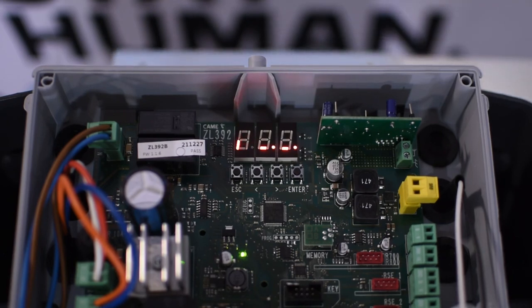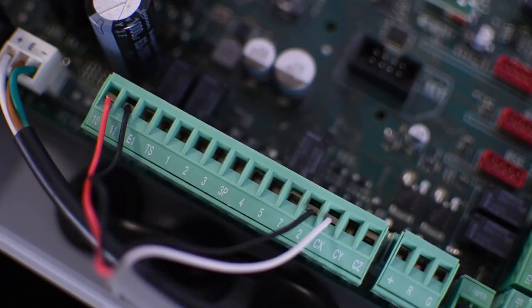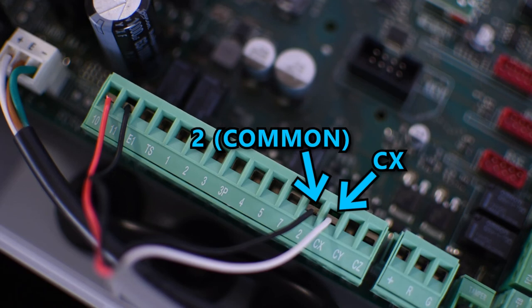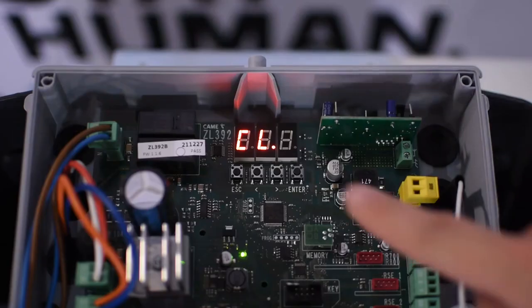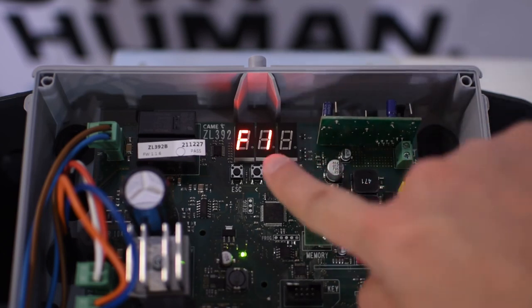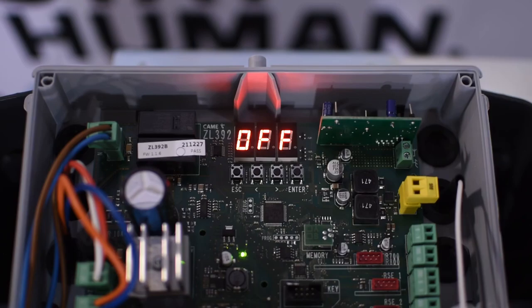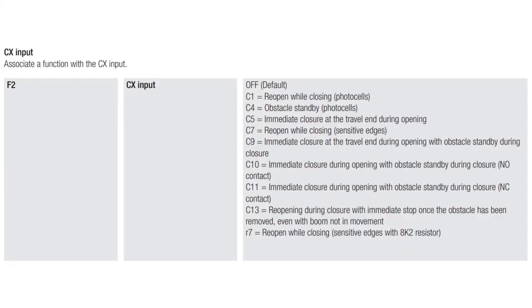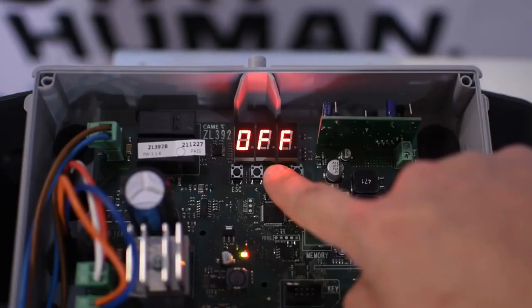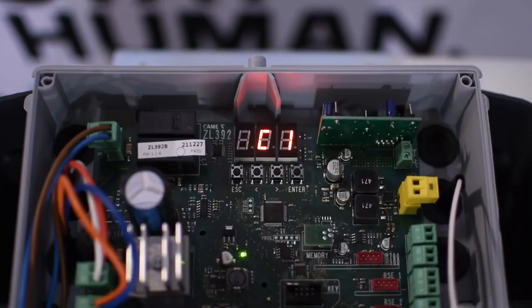If you connect a safety device like a photocell the normally closed contact should be connected between 2 and CX. To enable it go to F2 and select the corresponding behavior you want to execute when the photocell detects an obstruction. For example this photocell is in the path of the driveway so I'm going to select C1 that it will reopen while it's closing.